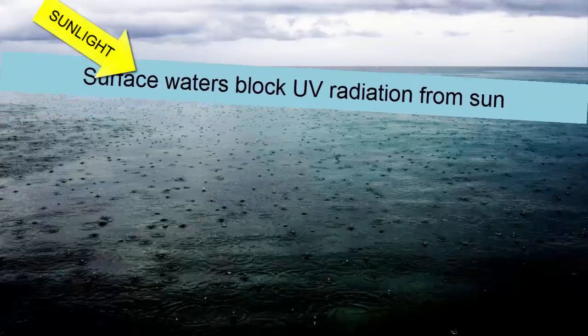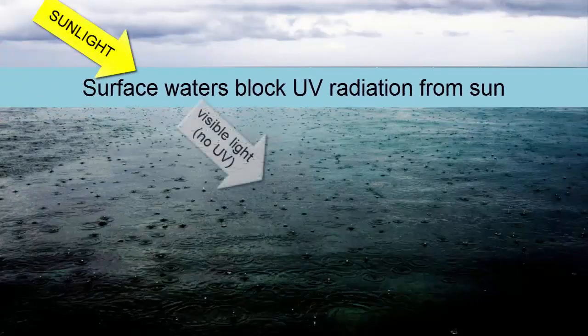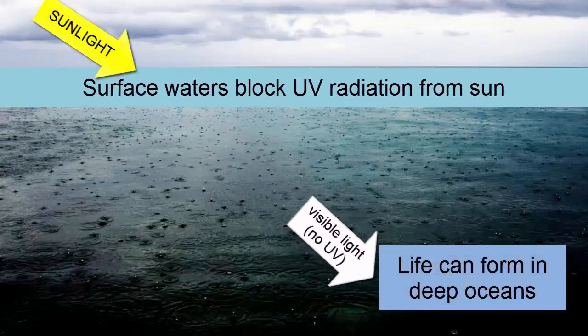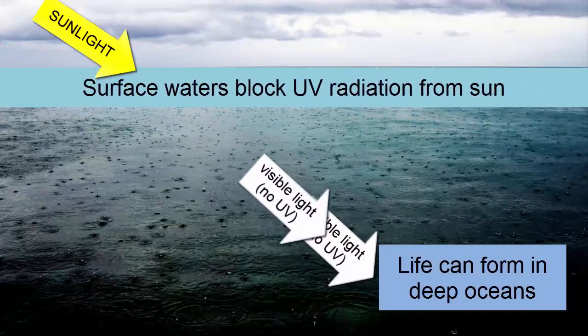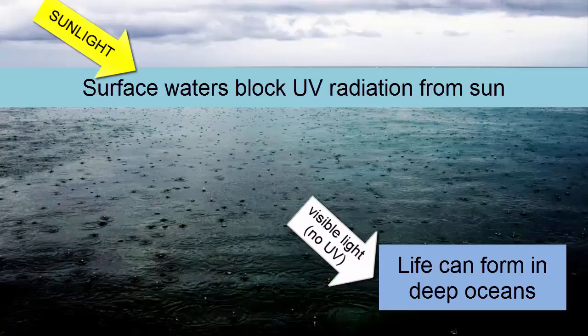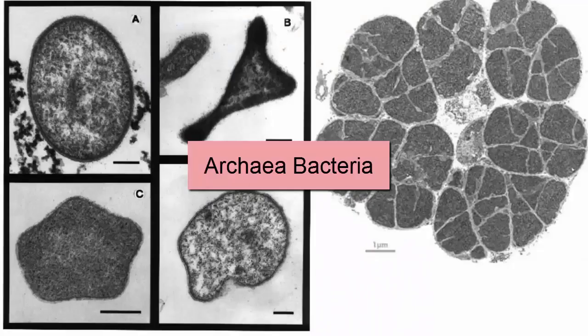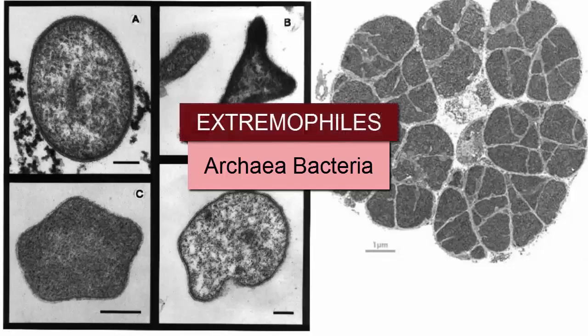Surface waters in the ocean block ultraviolet radiation, and thus oceans are the perfect place for life to first form. The very first organisms were the simplest single-celled bacteria, likely ones that could handle extreme conditions such as high heat and no light, also known as extremophiles.